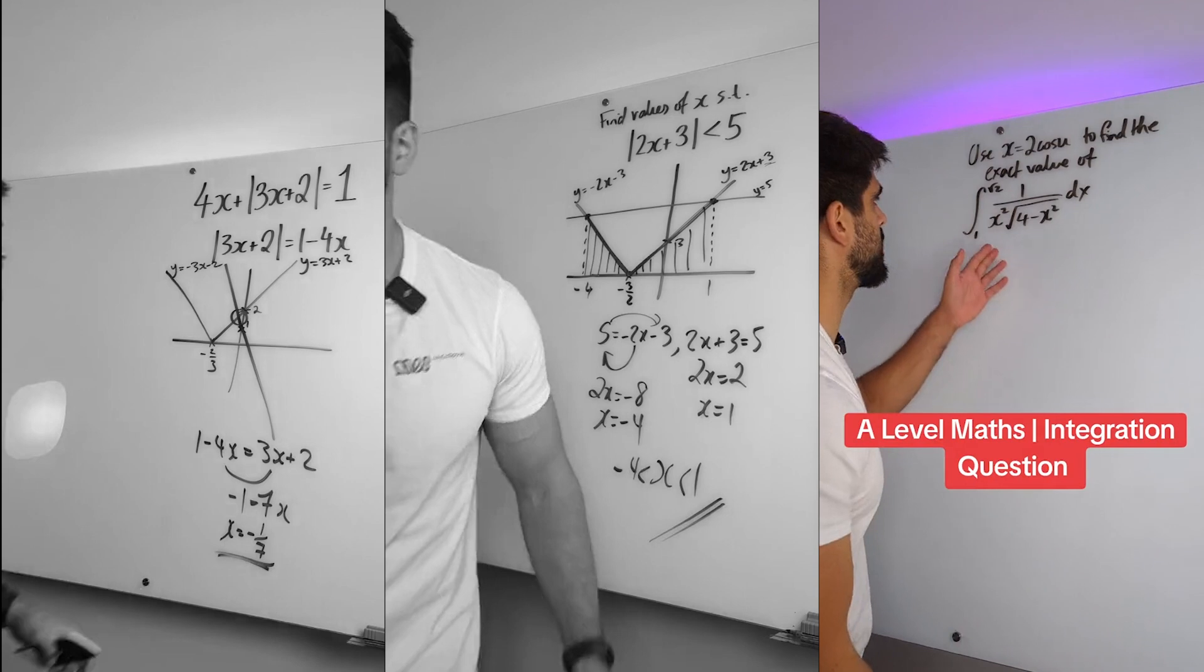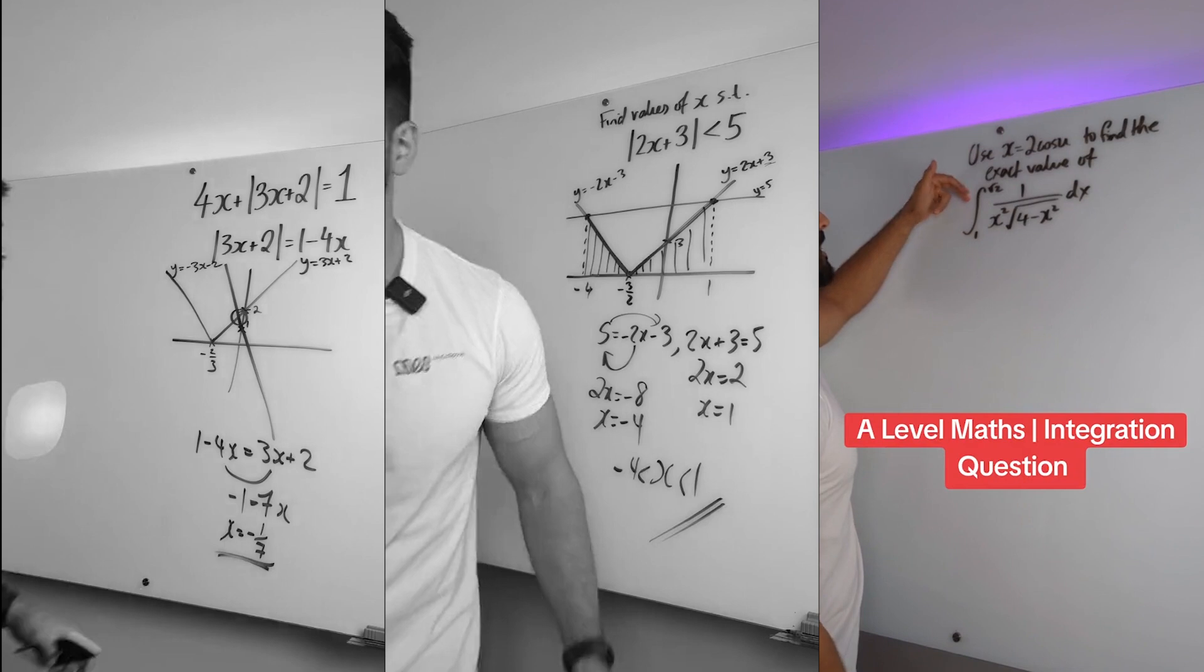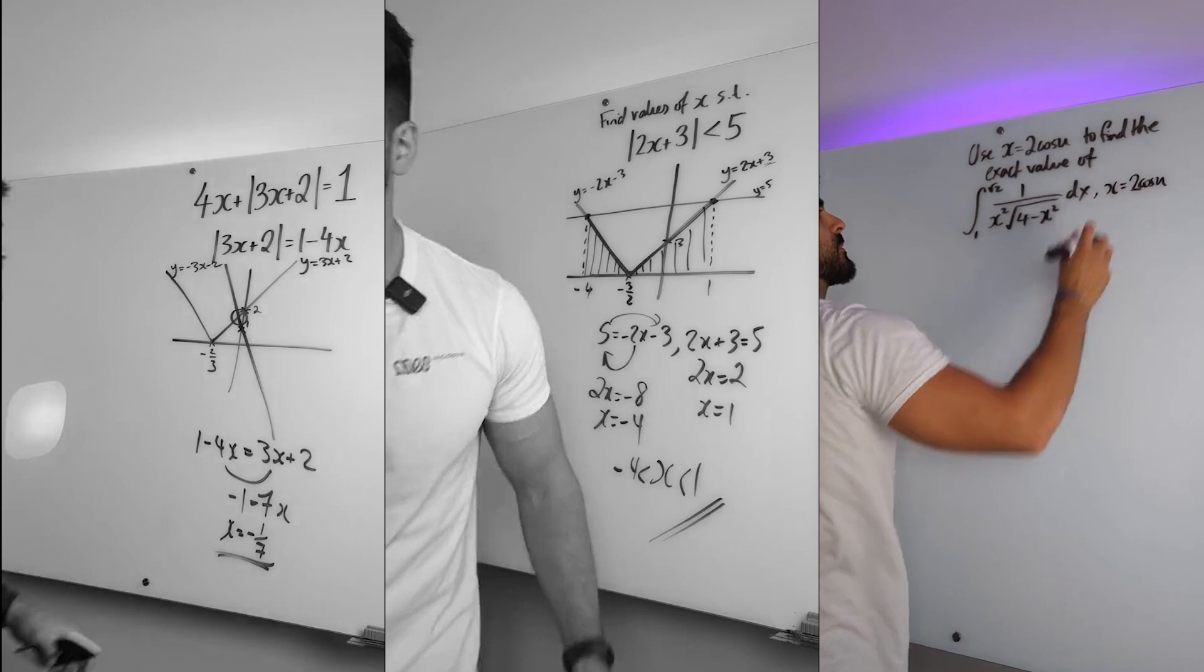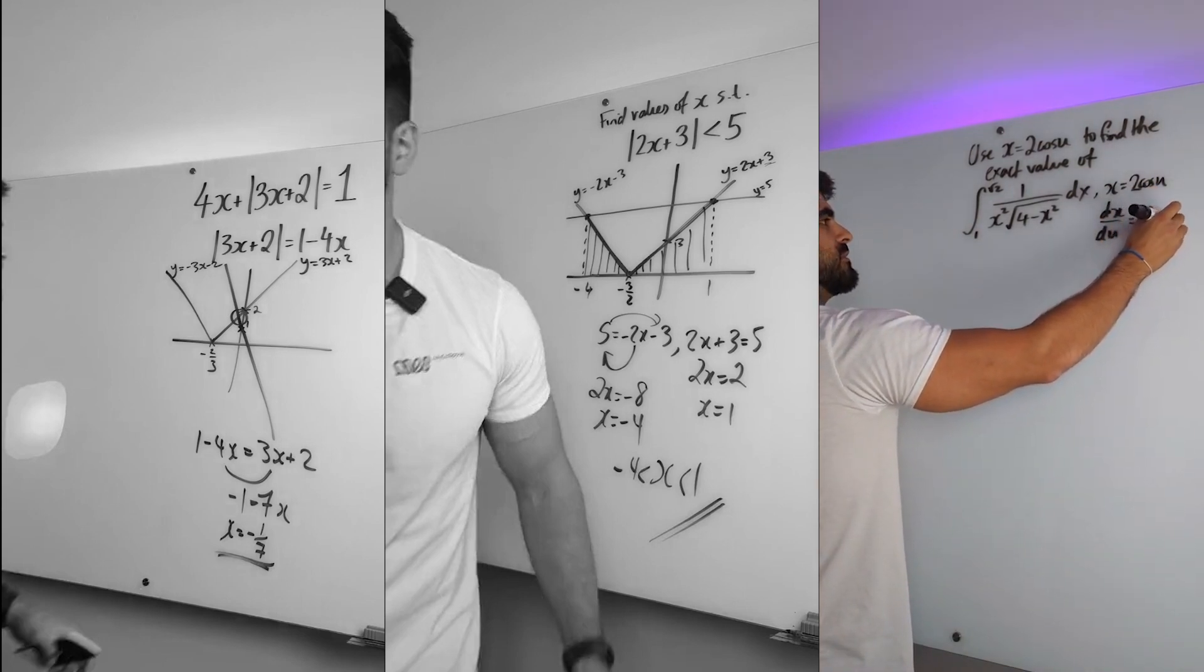Lidl were moving crazy with this one, one of their questions to become a baker there. Use x equals 2 cos u to find the exact value of this integral between 1 and root 2. Alrighty then. The first thing I'll do is trying to change dx into du. So we're going to differentiate. Cos u differentiates to minus sine, so you get minus 2 sin u.